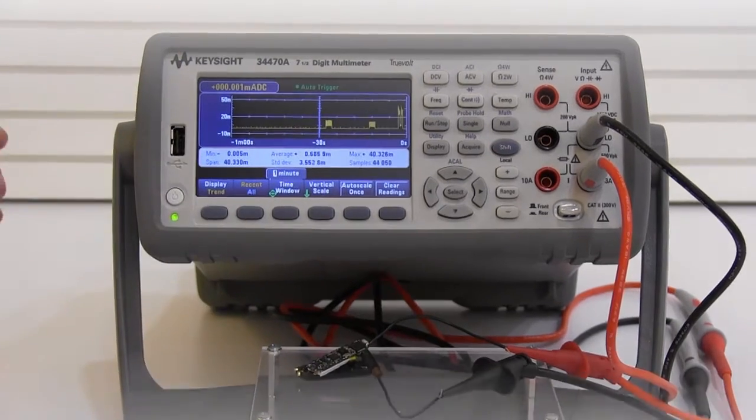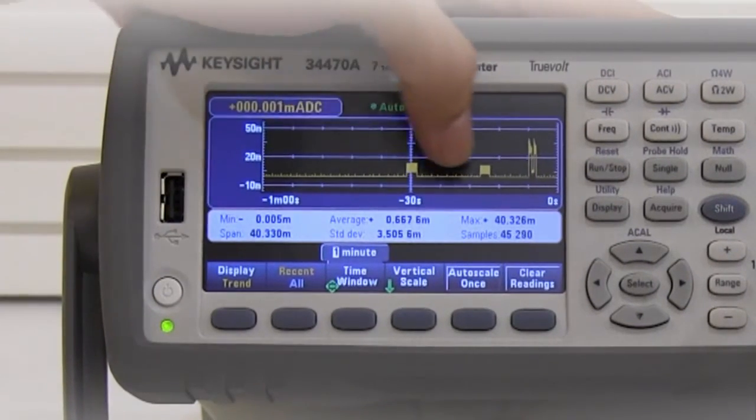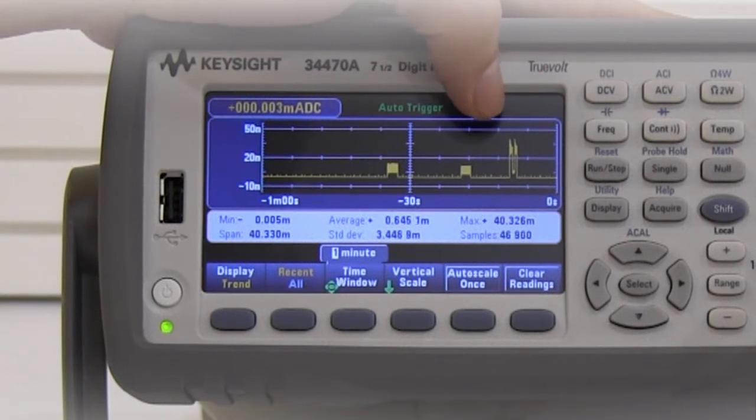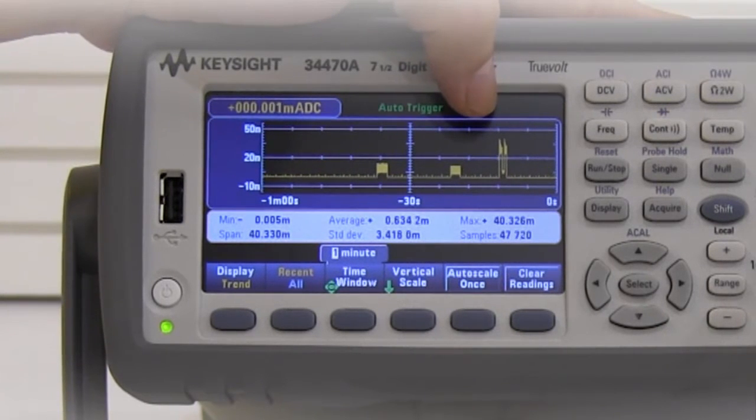All right, so you can see the trend chart actually gives us a very clear reading. The maximum reading now from the current drawn from the battery is 40 milliamps.